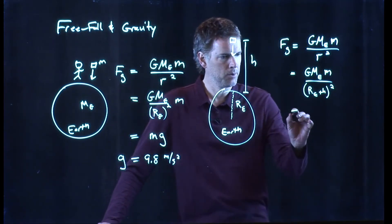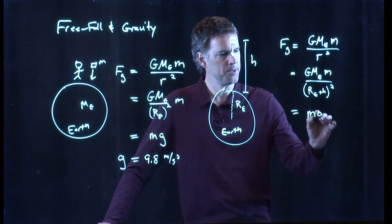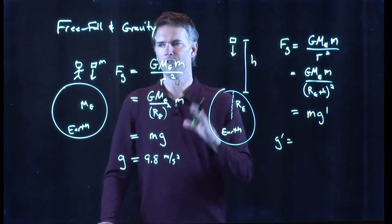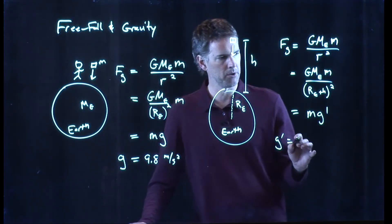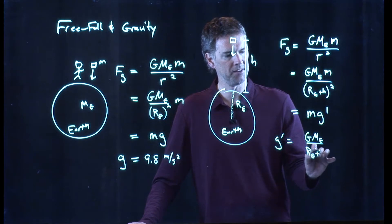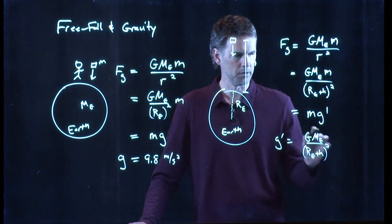And that we can call g prime, not derivative just some other g, some other acceleration, and it is GMₑ over (rₑ + h) quantity squared.